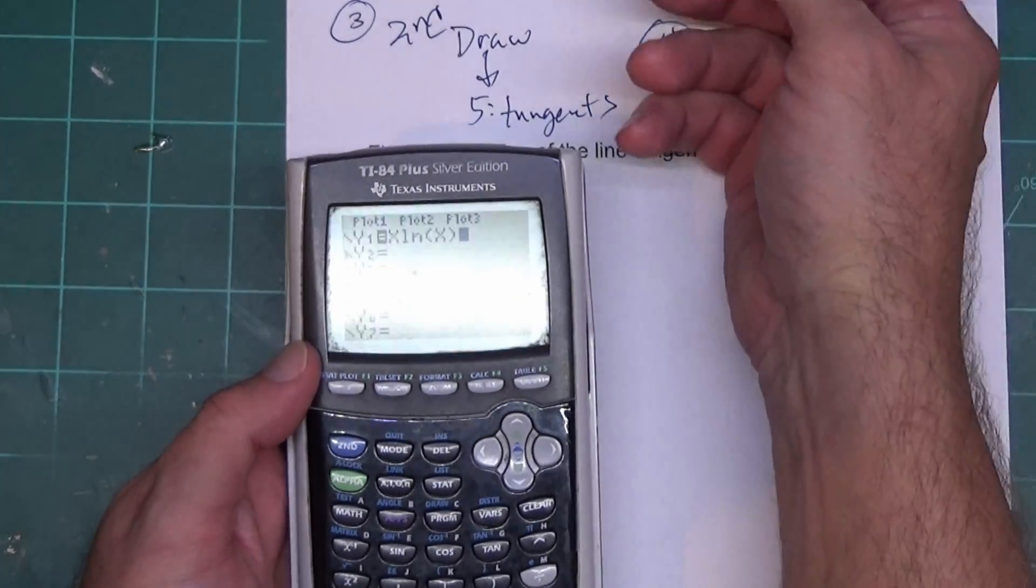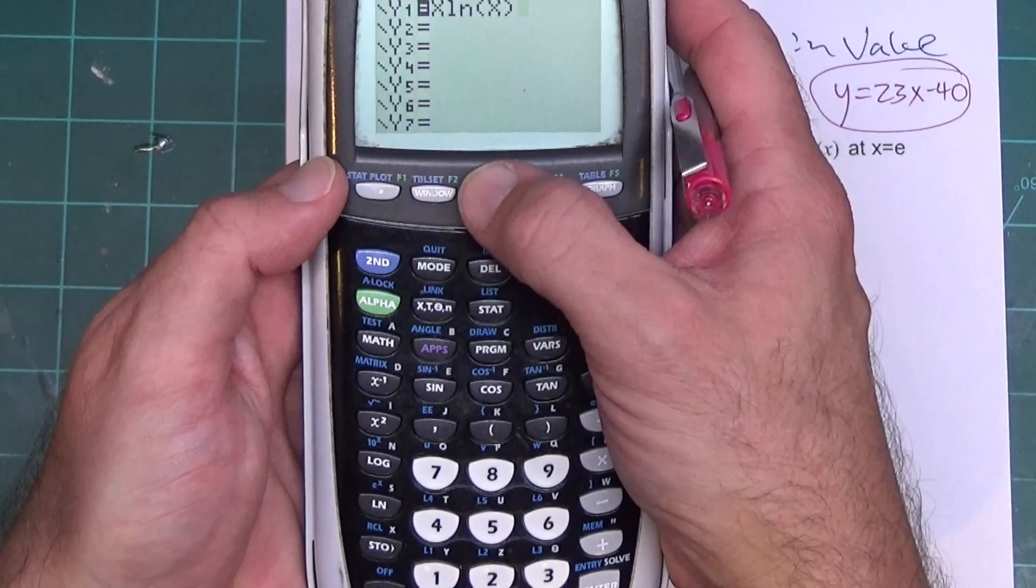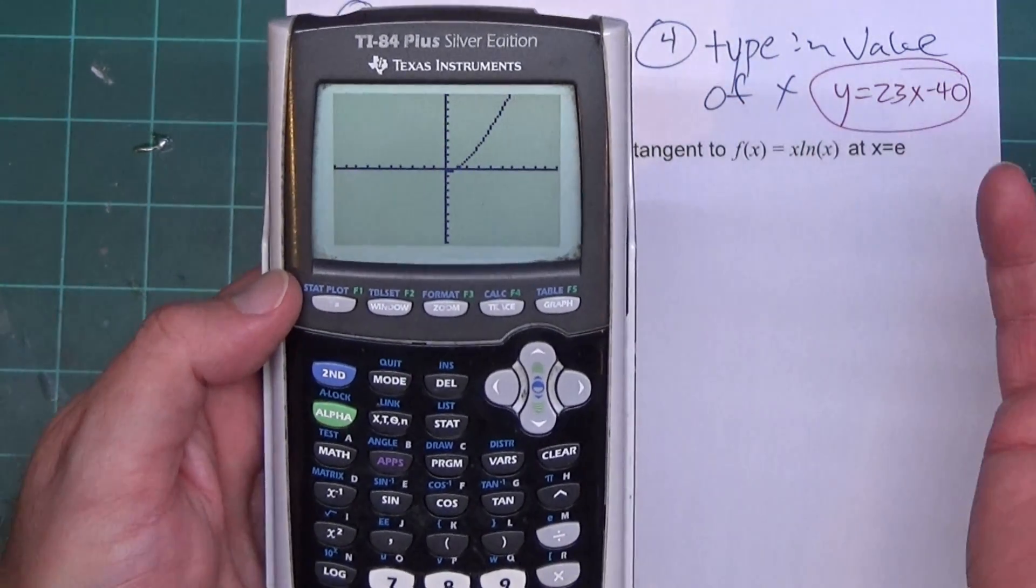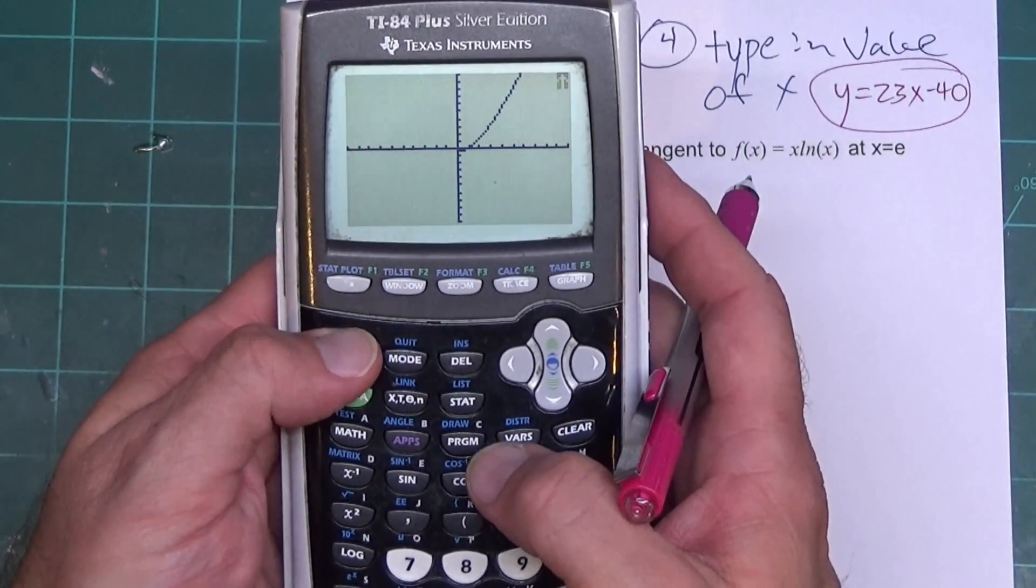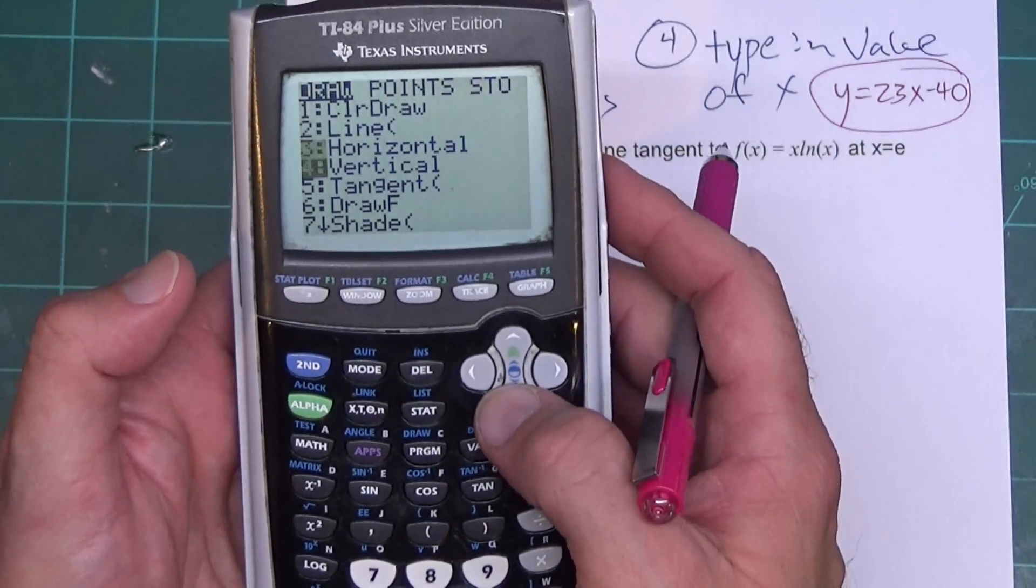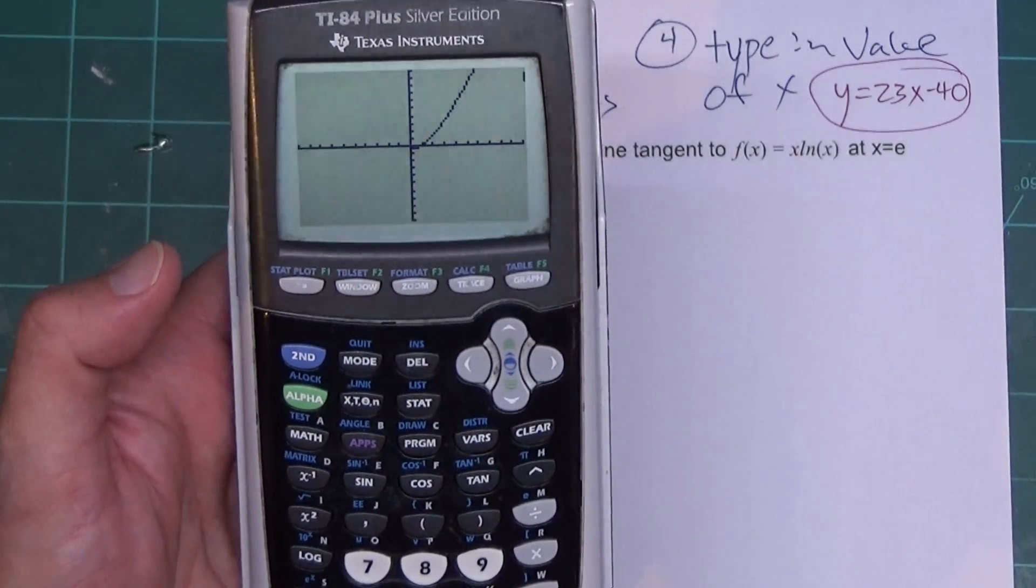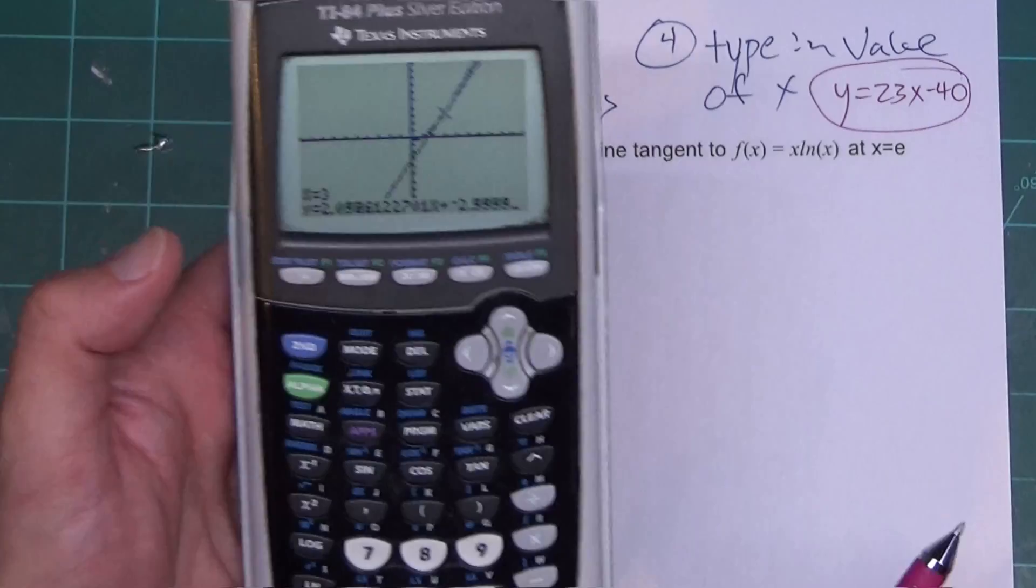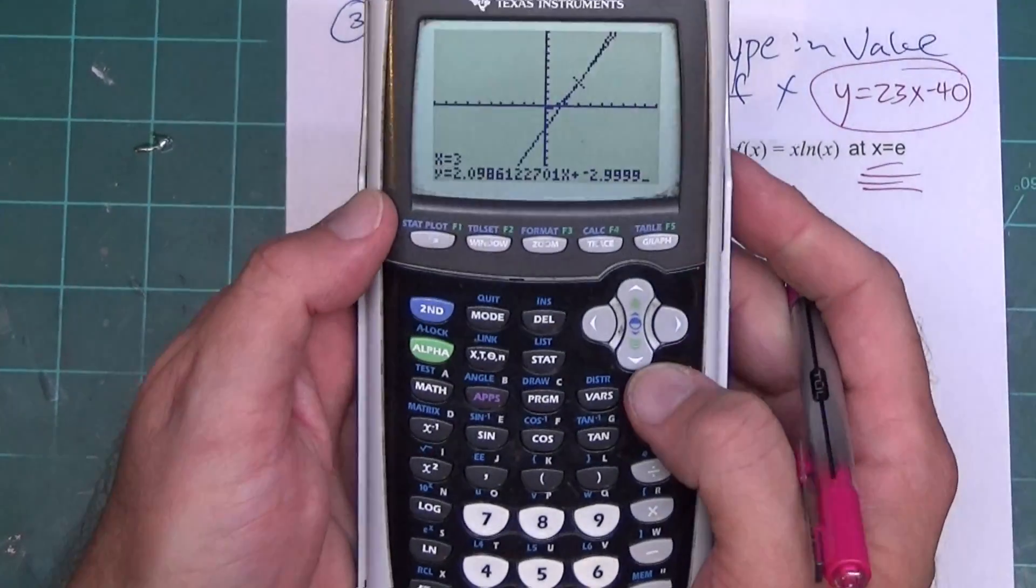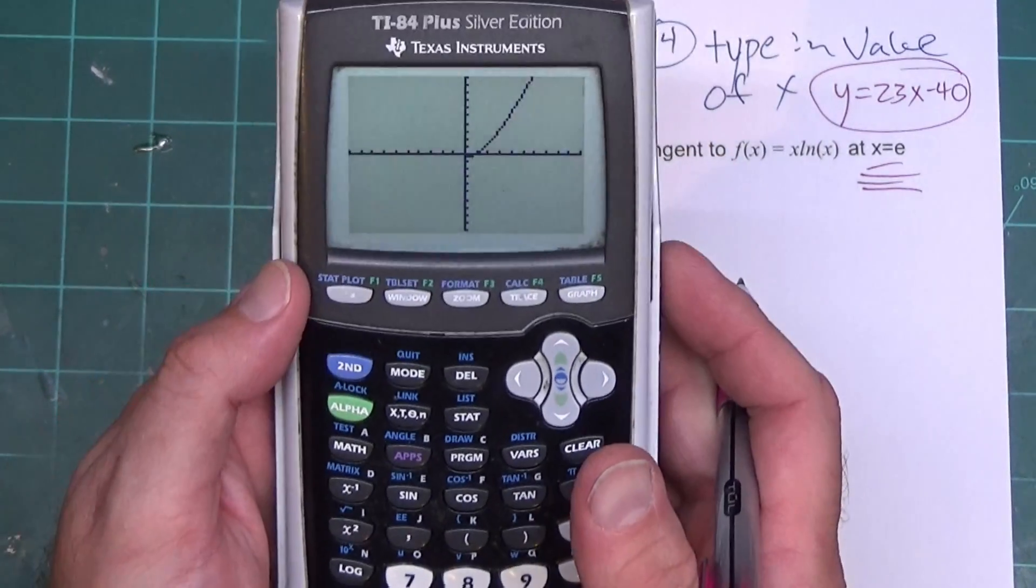And we'll go through the same process. We're going to press Zoom 6 to get a graph. Zoom 6. And I get a graph. Then I'm going to hit 2nd Draw. And I want number 5 for tangent. You could just press 5. And it said x equals 3. So I'm going to hit 3 and Enter. Oh, it's not at x equals 3. It's at x equals e. So I'm going to hit Clear. I'm going to press Zoom 6 again. That makes it redraw.